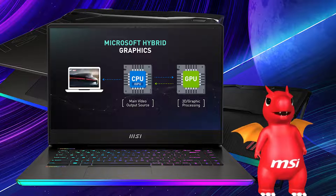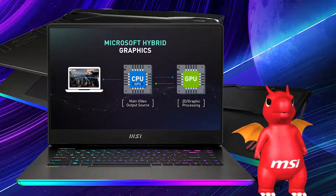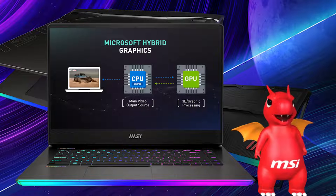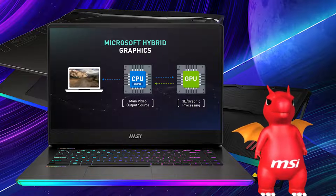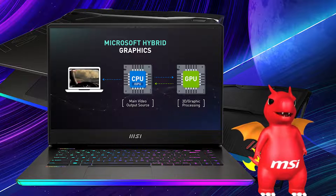If you launch some GPU intensive apps like games or 3D rendering software, the GPU will process these tasks and send them back to integrated graphics for outputting the video to the display. This structure is also called Microsoft Hybrid Graphics or Optimus.